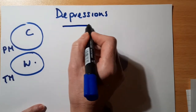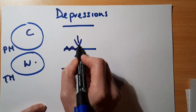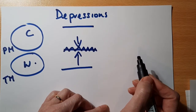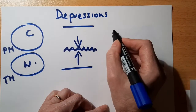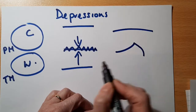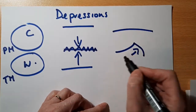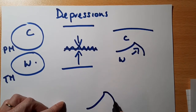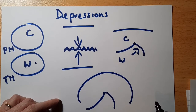These two air masses have very different characteristics, and when they meet, the point at which they meet is called a front — also known as the boundary between two air masses. Because they have different characteristics, they cannot mix. So the warm air mass tends to start pushing into the cold air mass, forming what we call a little dent or wave. As it pushes into the cold air, we have the beginning of what we call a depression.